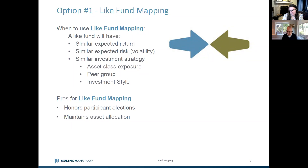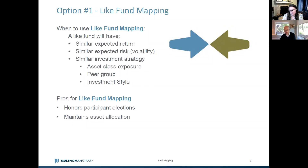We want to make sure we're not moving participants from a low volatility fund to a high volatility fund, which would substantially change their risk profile. We're trying to map to like options, ultimately looking for funds that are highly correlated so they move in similar patterns over time. The benefit of like fund mapping is that it honors participant elections — a participant has decided to be in a particular fund category and you're replacing with an option that still honors that decision.